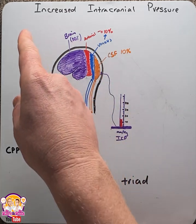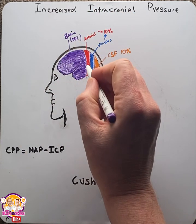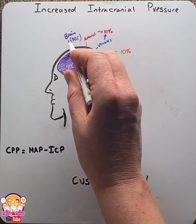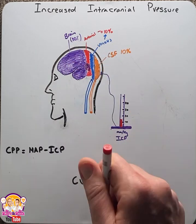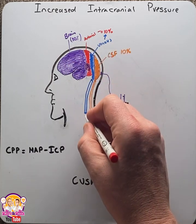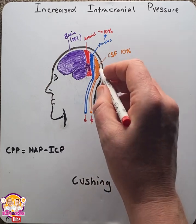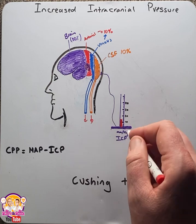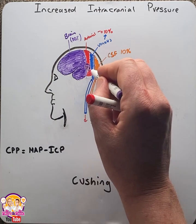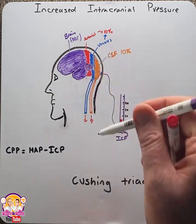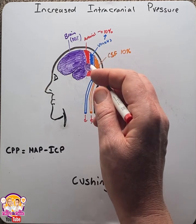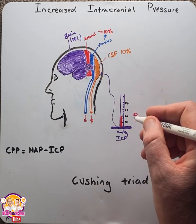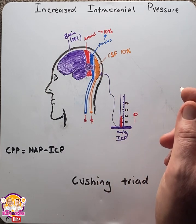Now let's look at a case that would increase intracranial pressure. If a person was to develop a brain tumor, there would be an increase in brain tissue above the 80%, and both the blood and the CSF would start to drain, decreasing their volume to maintain ICP. This is known as compensation. But as the tumor continues to grow, it'll eventually reach a size where the other two components cannot compensate, and therefore ICP will start to rise. This is known as a decompensation state.